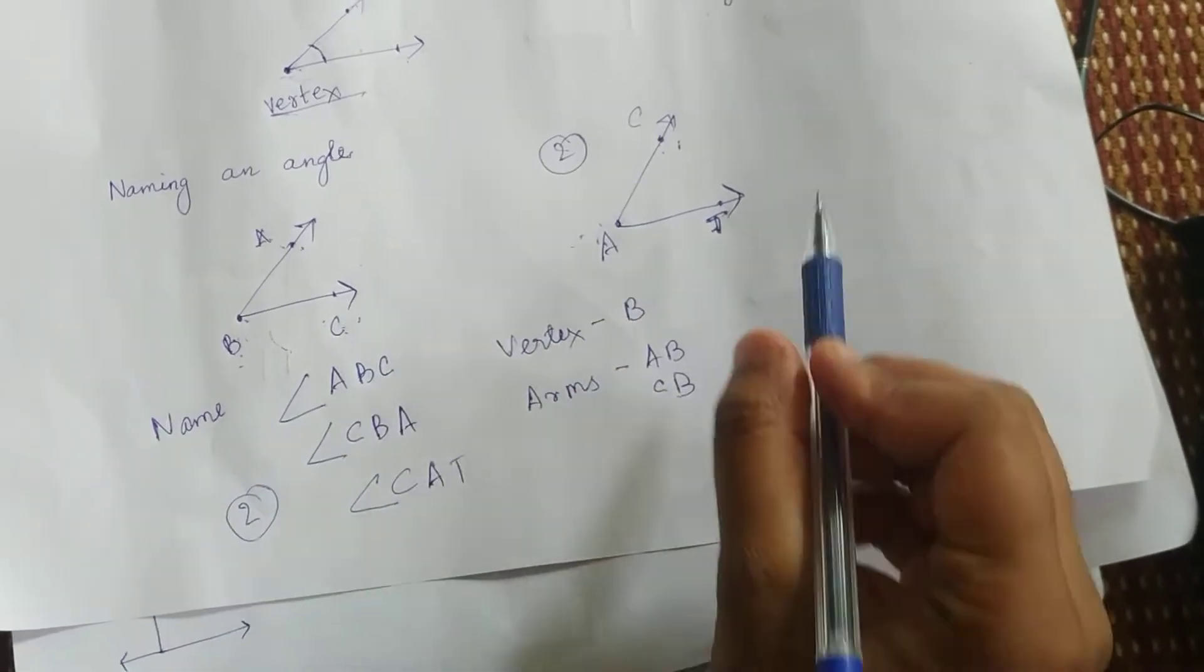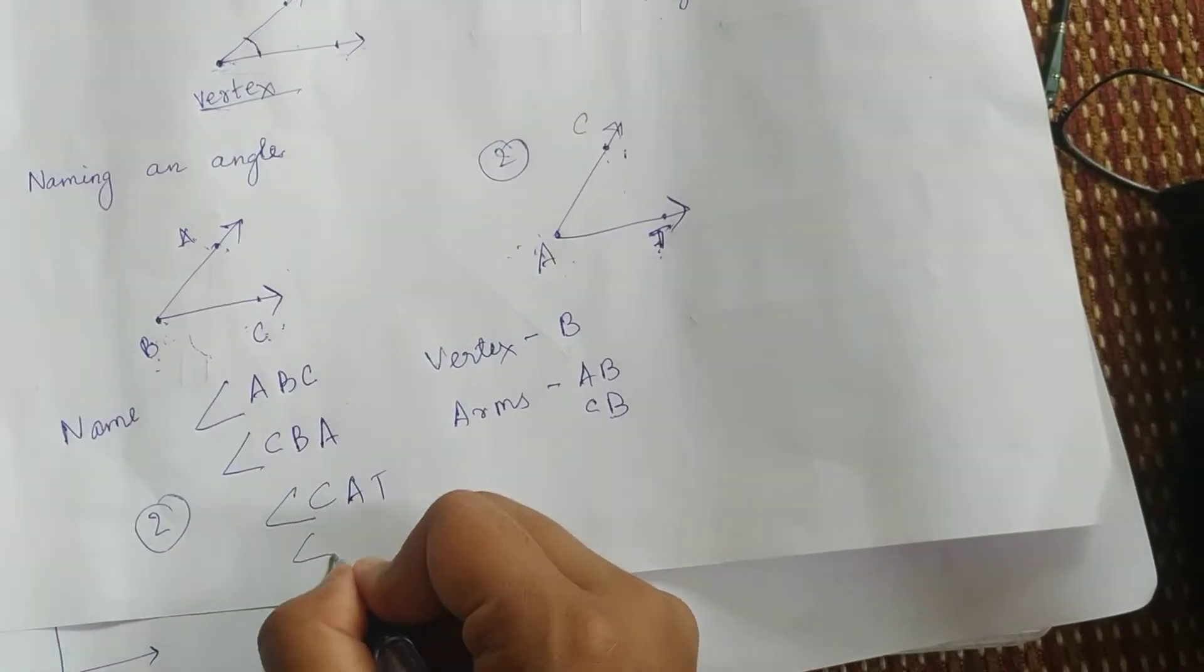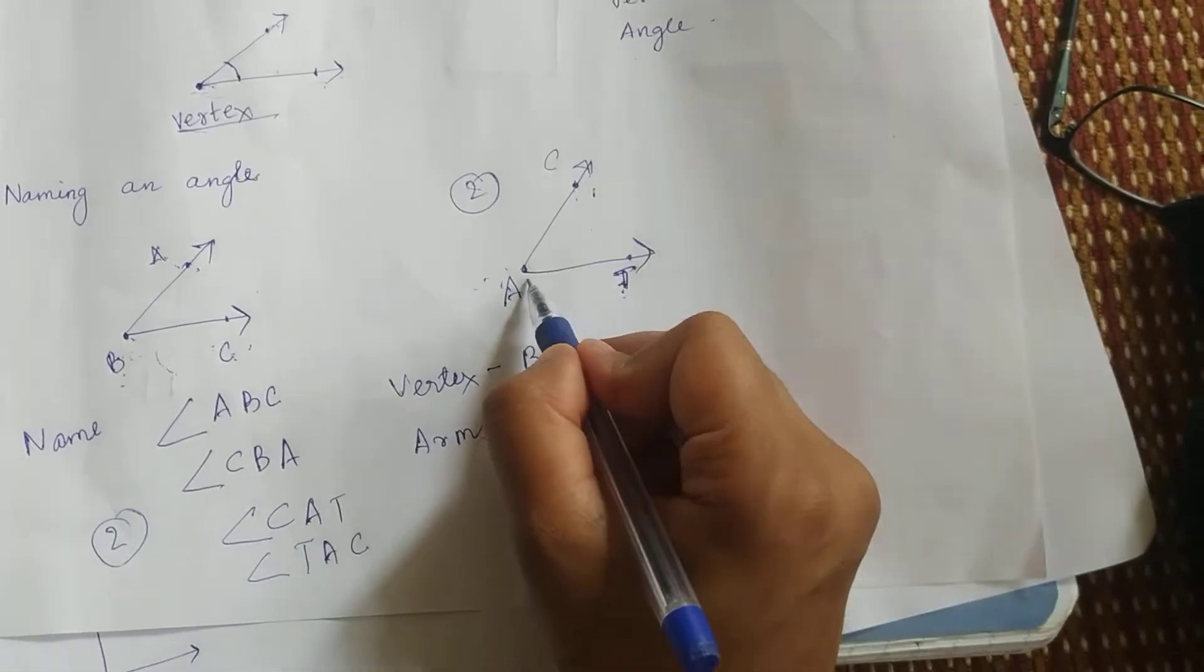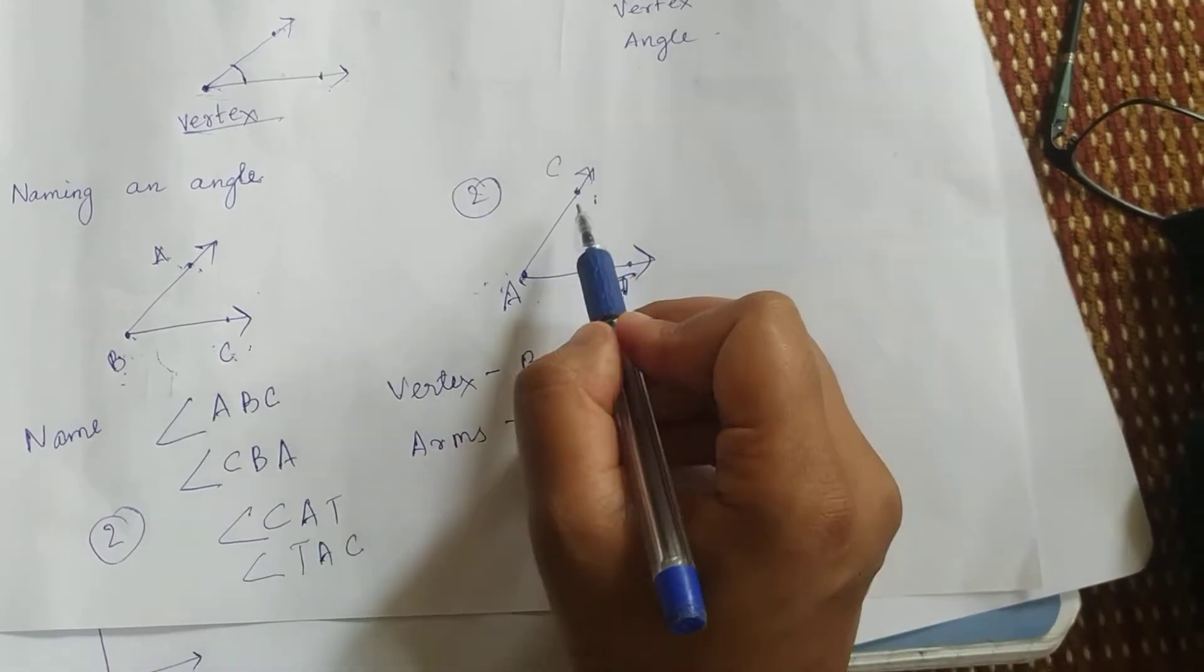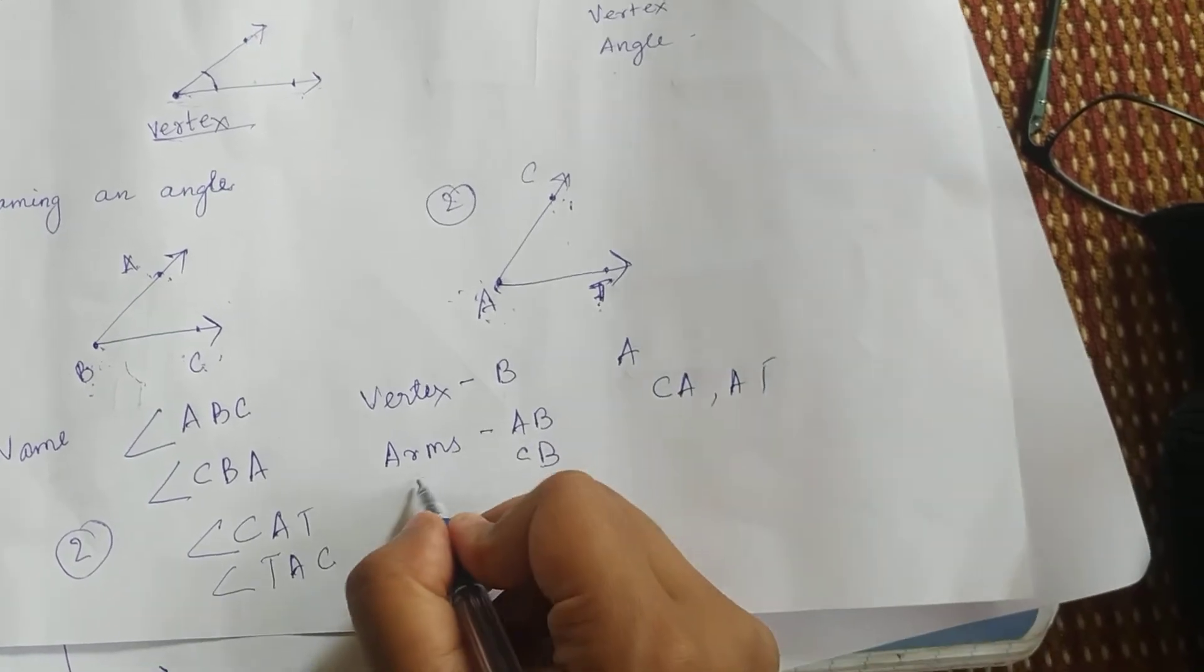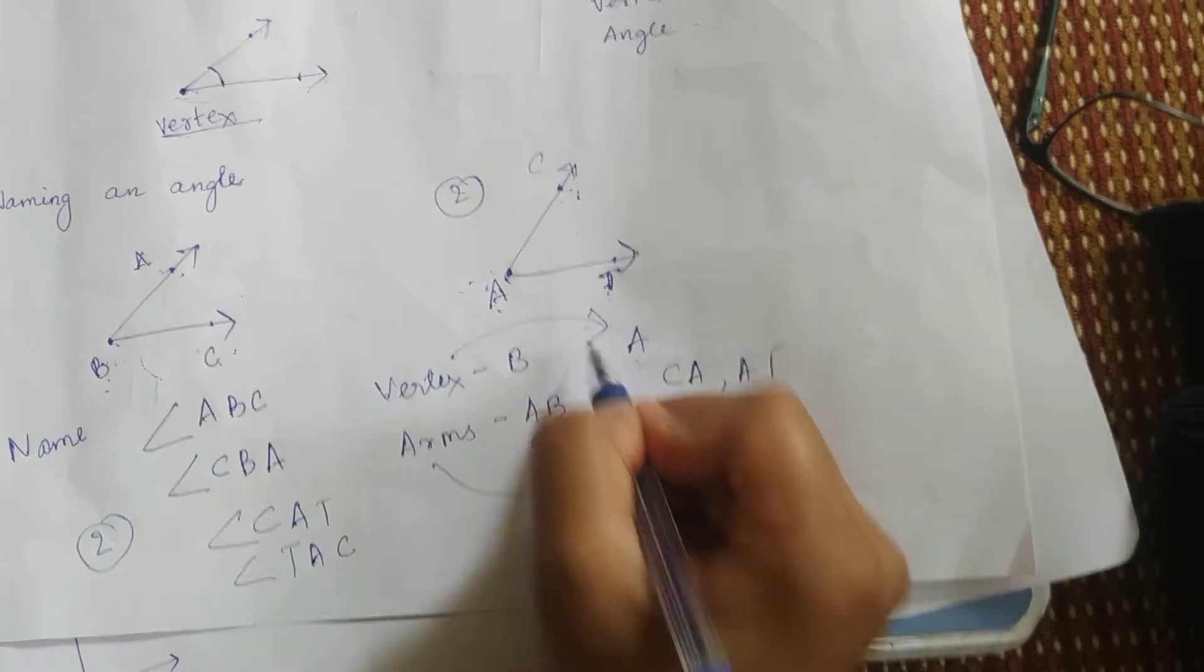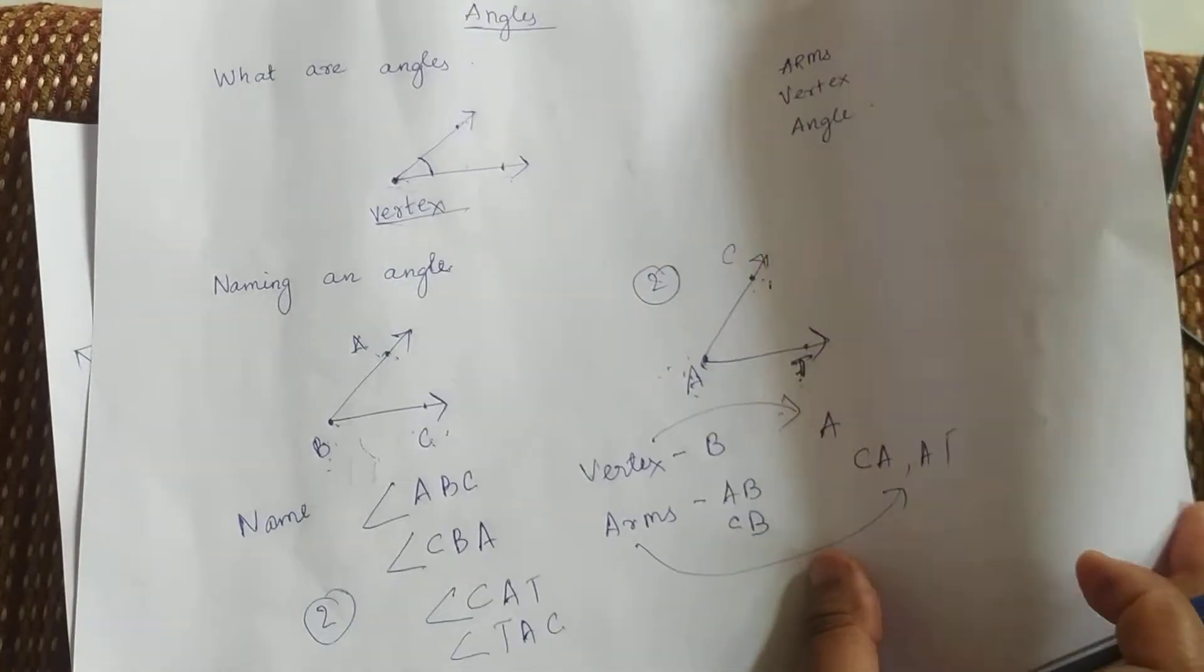CAT. We cannot call this CTA. You have to go in this direction - one after another. So CAT, or we can call it TAC. What is its vertex? Vertex means common point, which is A. And what are its arms? CA and AT are its arms.